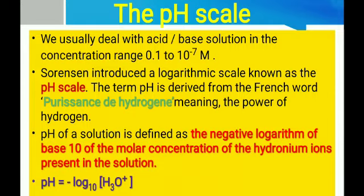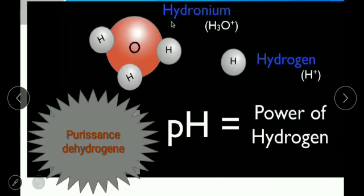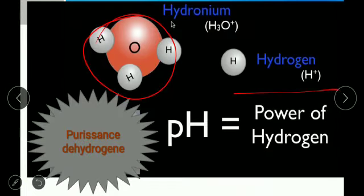pH = −log₁₀[H₃O⁺]. The hydronium ion is H₃O⁺. What is pH? The power of hydrogen — the power of hydrogen is pH.